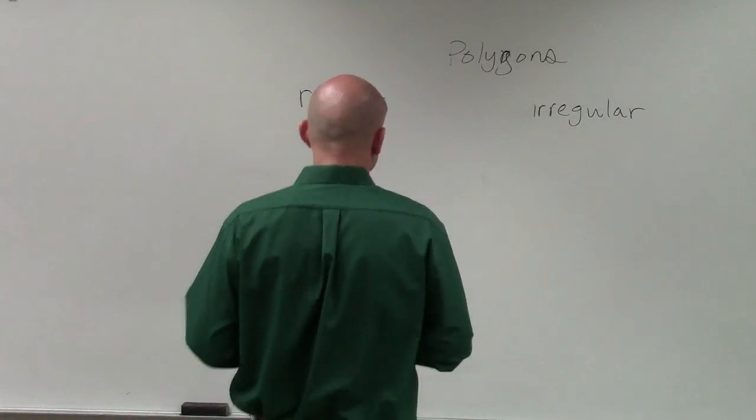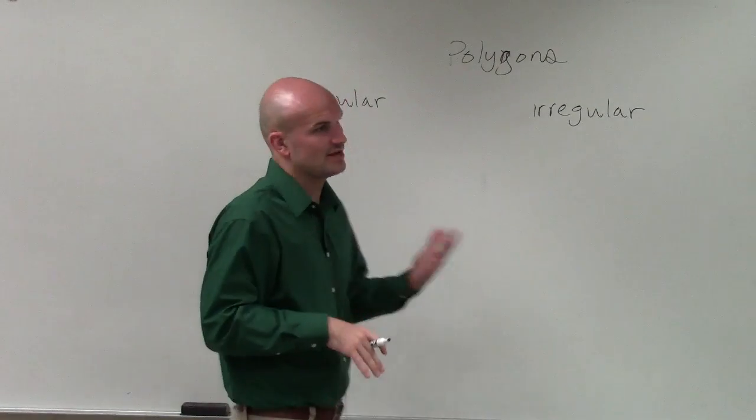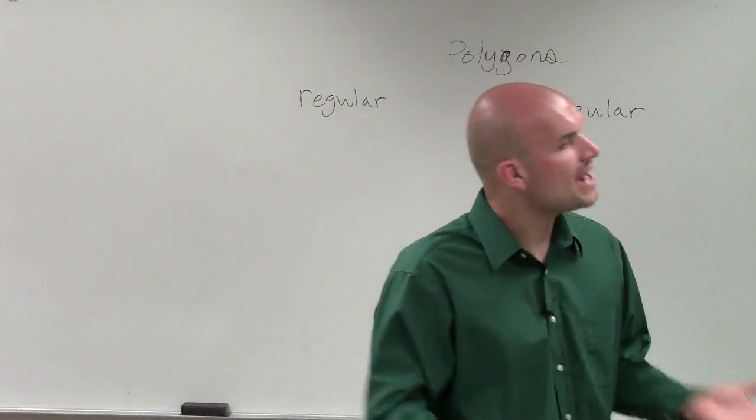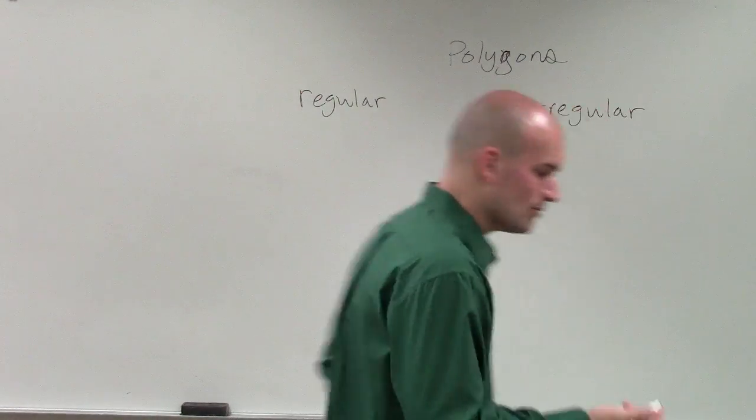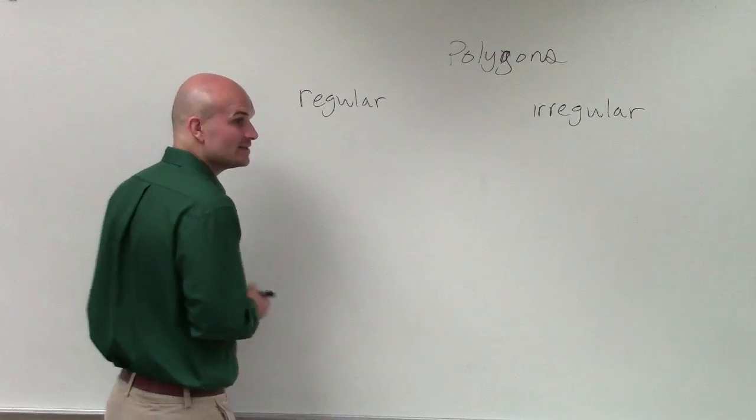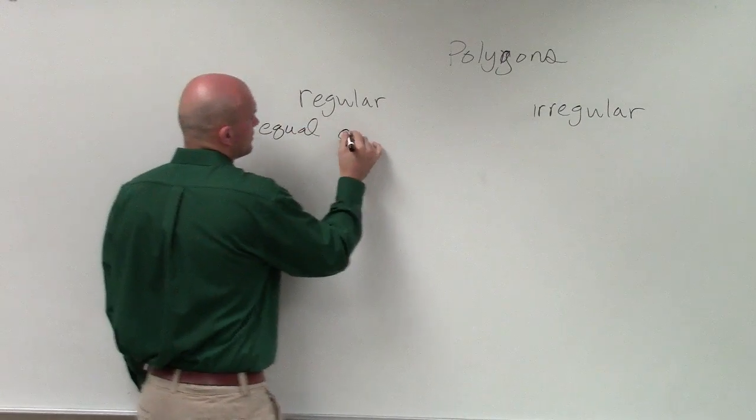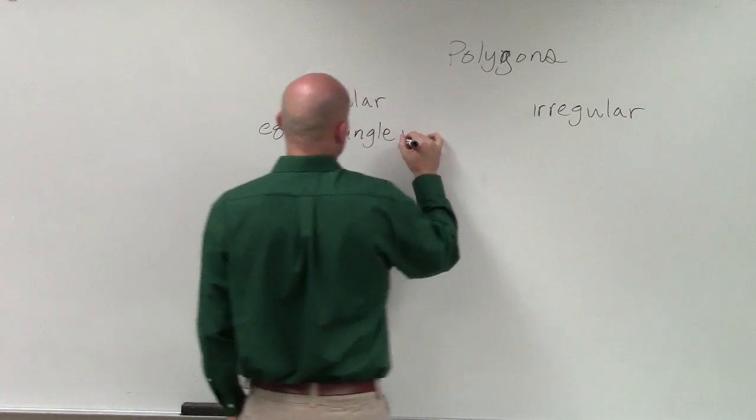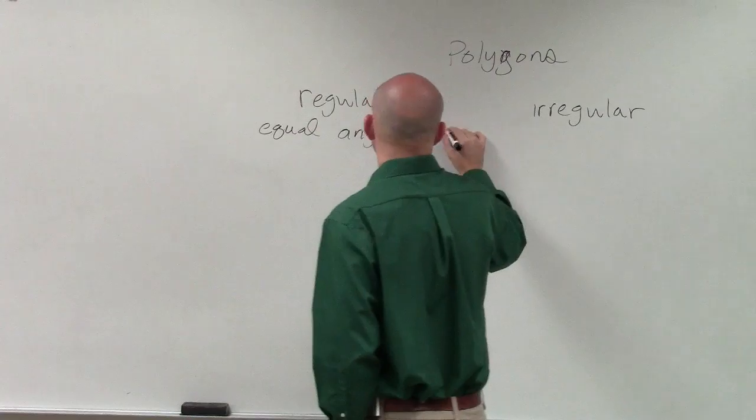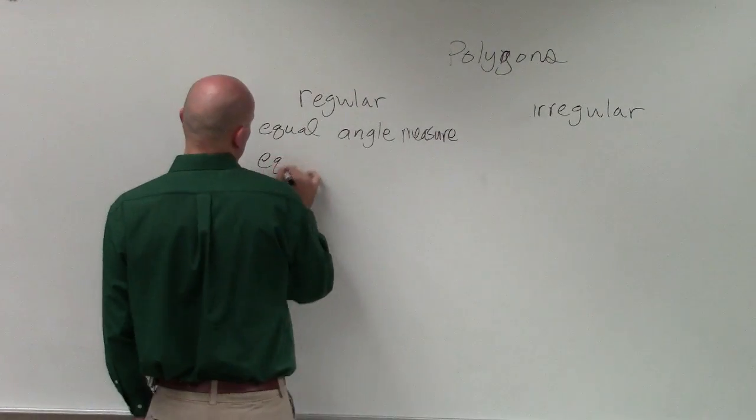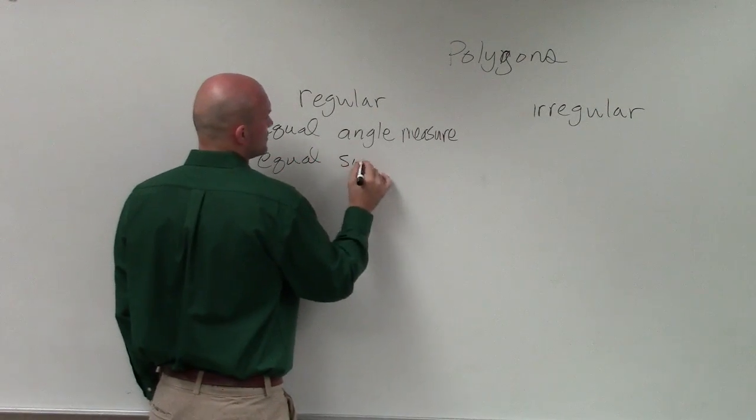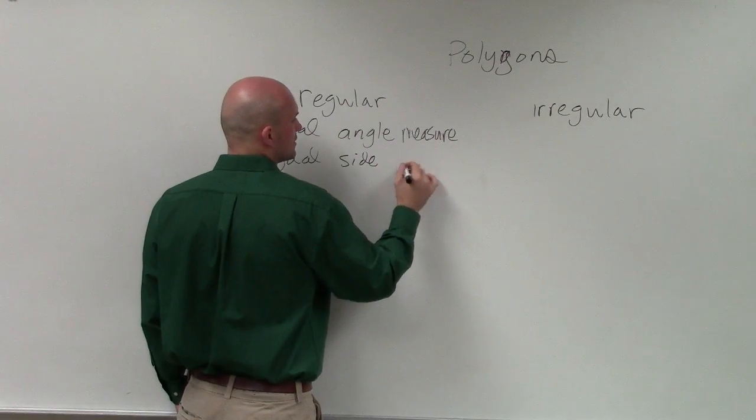So ladies and gentlemen, what we're going to talk about here is regular and irregular polygons. Now, when we're talking about regular polygons, what that means is they're going to have equal angle measure and equal side length.